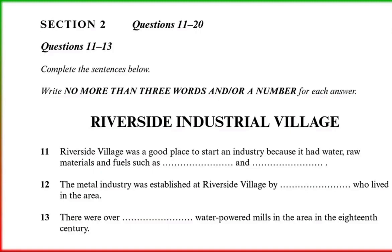Good afternoon everybody, and welcome to Riverside Industrial Village. I'm just going to give you a brief account of the history of the museum before letting you roam about on your own. From where we're standing you've got a good view of the river over there, and it was because of this fast-flowing water that this site was a natural place for manufacturing works. The availability of raw materials like minerals and iron ore, and local fuels like coal and firewood, all made this site suitable for industry from a very early time.